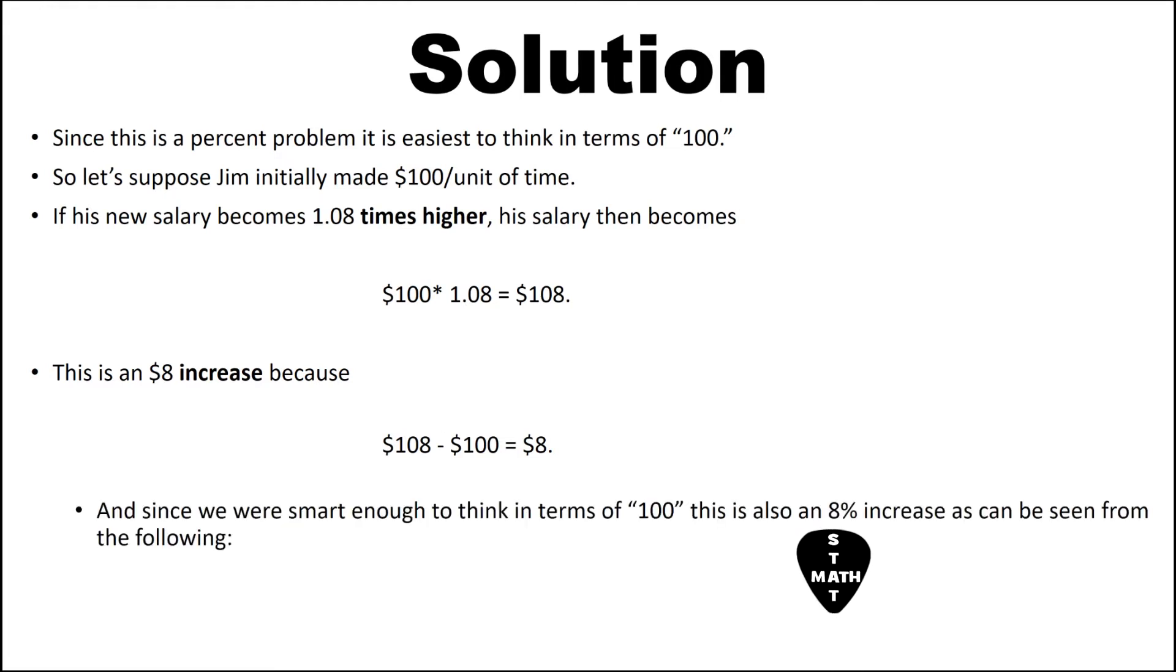And since we were smart enough to think in terms of 100, this is also an 8% increase as can be seen from the following. Percent increase equals increase divided by initial value times 100%, which in this case is $8 divided by $100 times